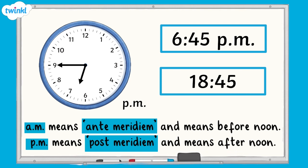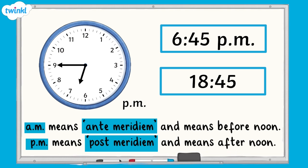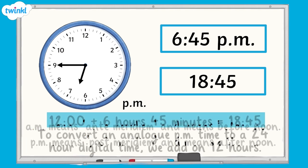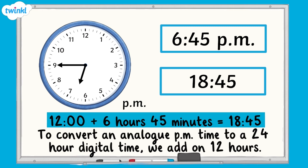The 12 hour digital clock shows us that the time is 6.45 in the evening, as it shows us PM. The 24 hour clock shows the time 18.45, as the time is 6 hours and 45 minutes after 12 o'clock midday. When converting a PM time on an analogue clock to a 24 hour digital clock, we add 12 hours onto the time.